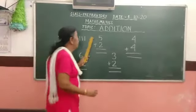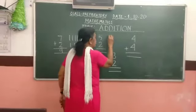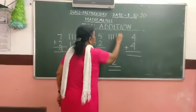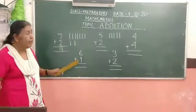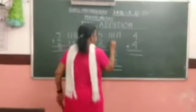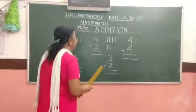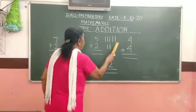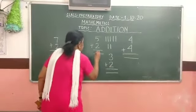The second one, five. We will draw how many lines? Five lines. Yes. One, two, three, four, five. And here two. How many lines will we draw? Two lines. One, two. Total lines? One, two, three, four, five, six, seven. We will write here. Seven.